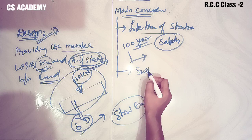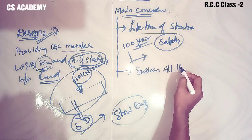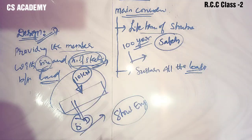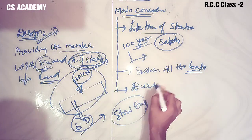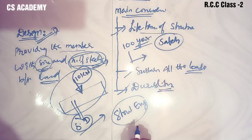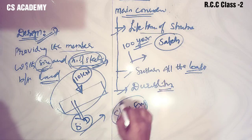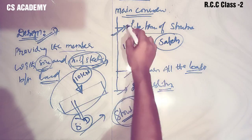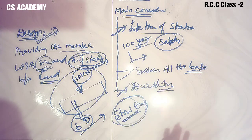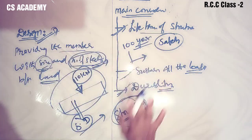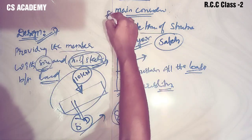The structure must sustain all loads for 100 years. We also consider durability - durability is very important. These are the three main considerations a structural engineer must address before going into design. So this is the design basic: what is exactly the meaning of design and what are the different considerations before going into the design.